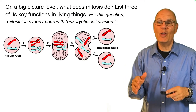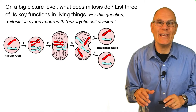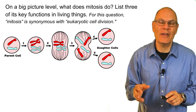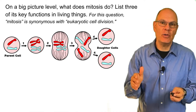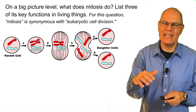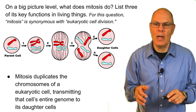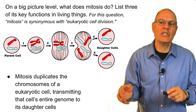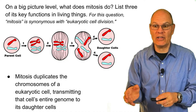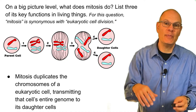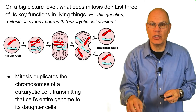On a big picture level, what does mitosis do? List three of its key functions in living things. Note for this question that mitosis, as it often is, is synonymous with eukaryotic cell division. Mitosis duplicates the chromosomes of a eukaryotic cell, transmitting that cell's entire genome to its daughter cells.